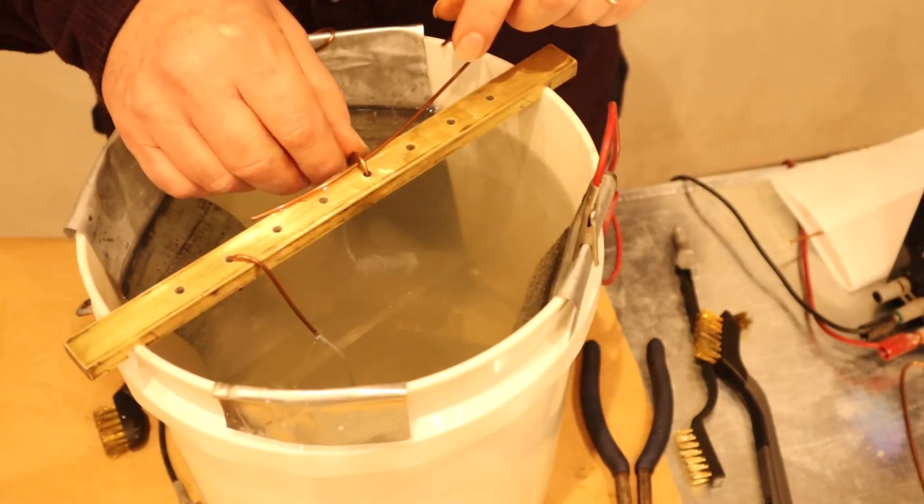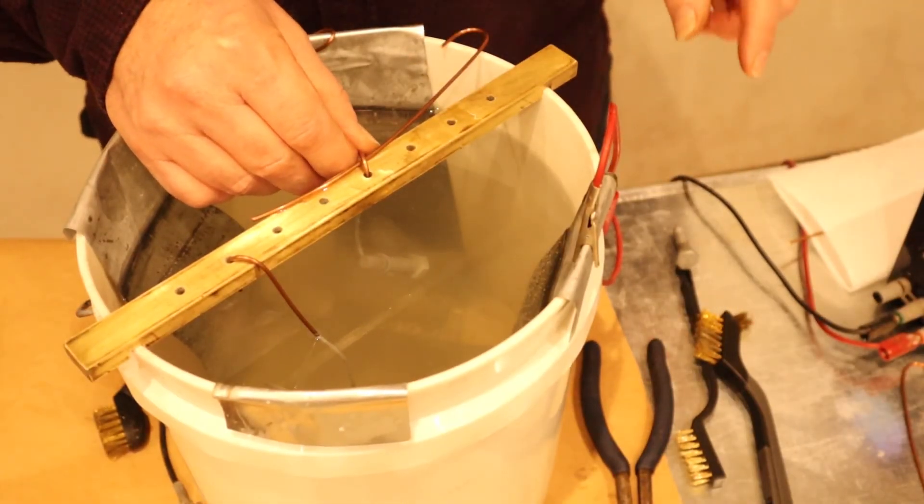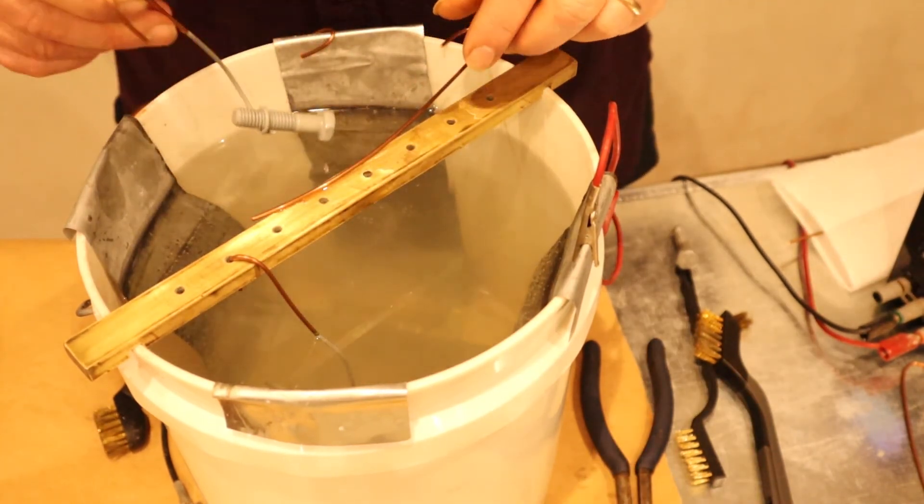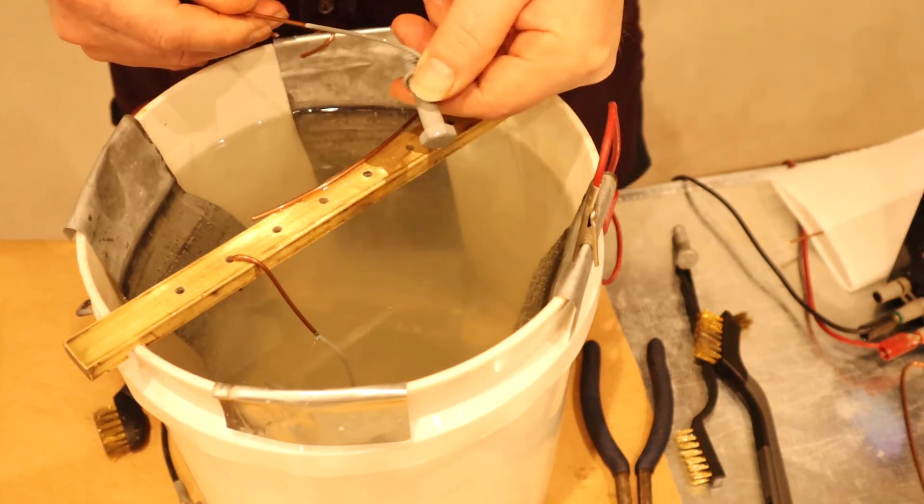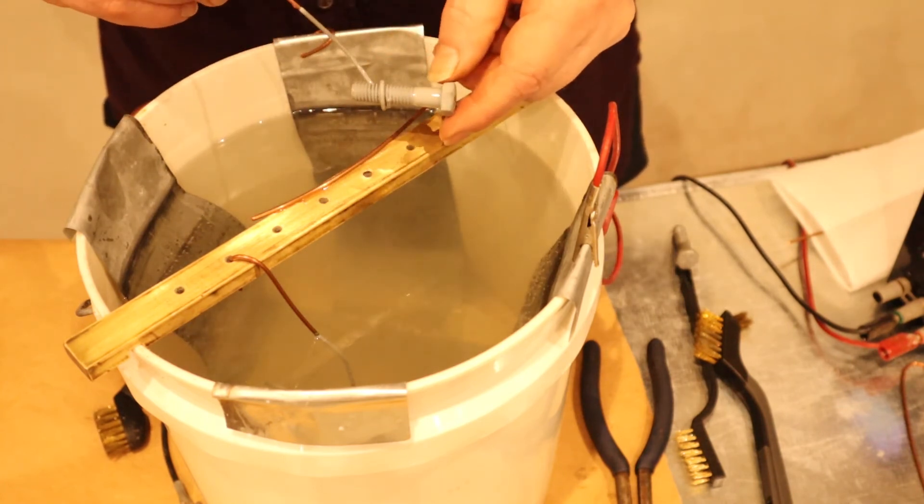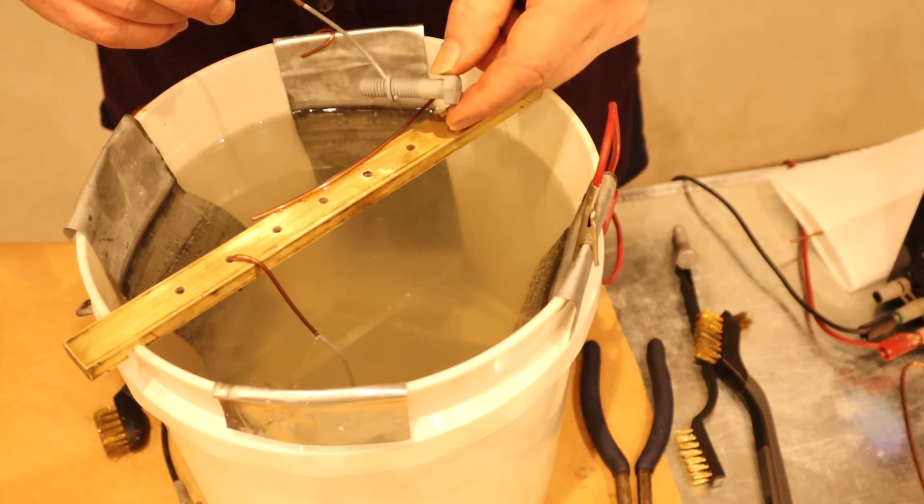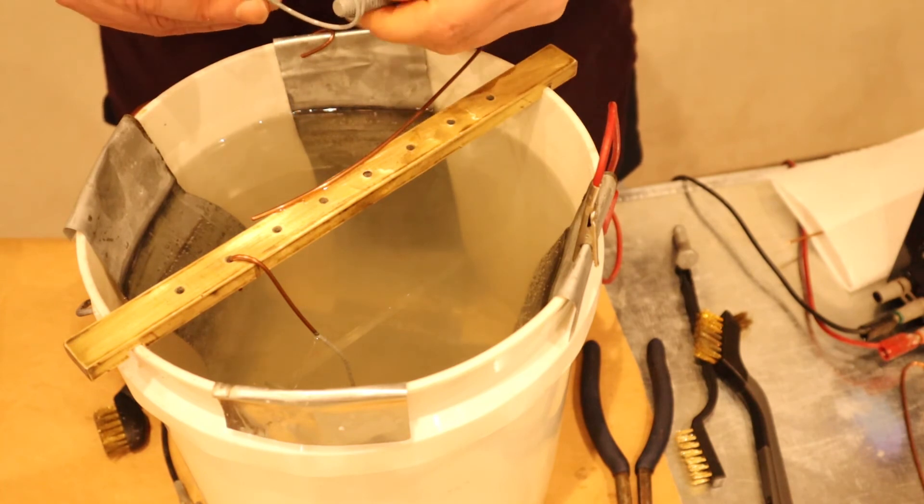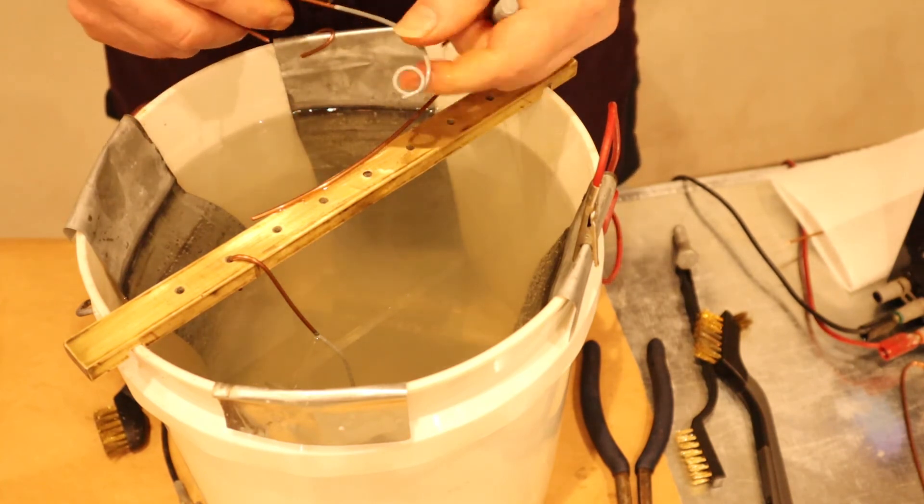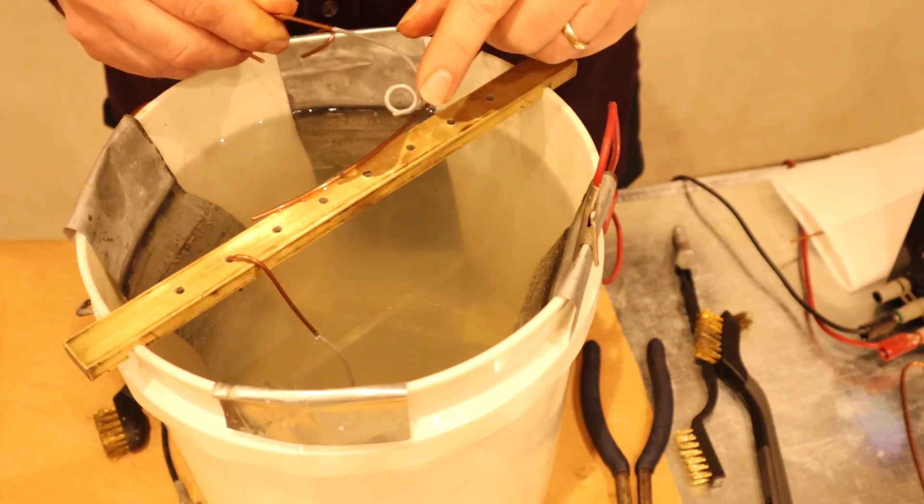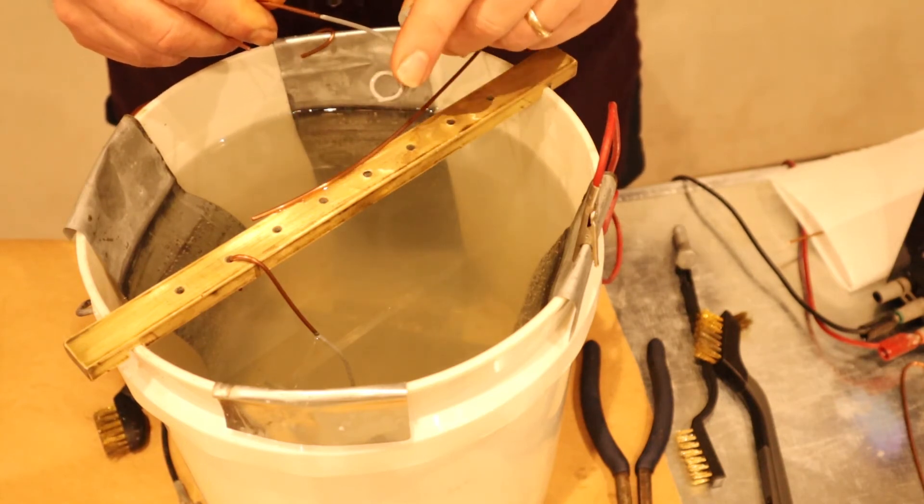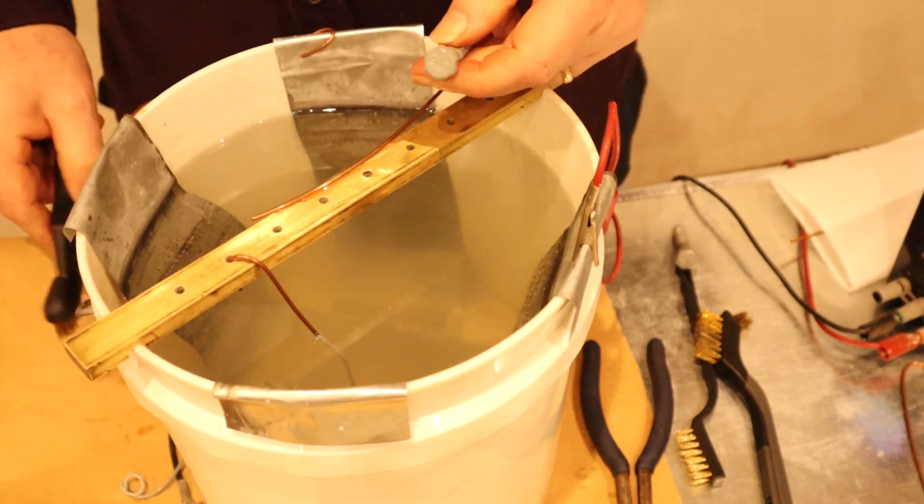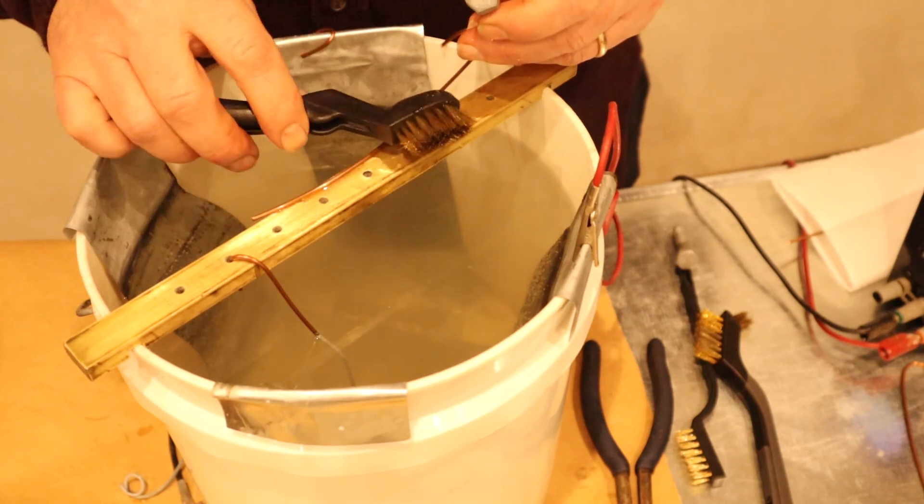Now that the parts we're plating have a uniform gray finish, we will shut the power supply off and pull the bolt out. What you can see is it's a pretty uniform gray finish onto the fasteners. You can actually even see under the copper that you've got some zinc onto the wire that we're actually suspending the components in.